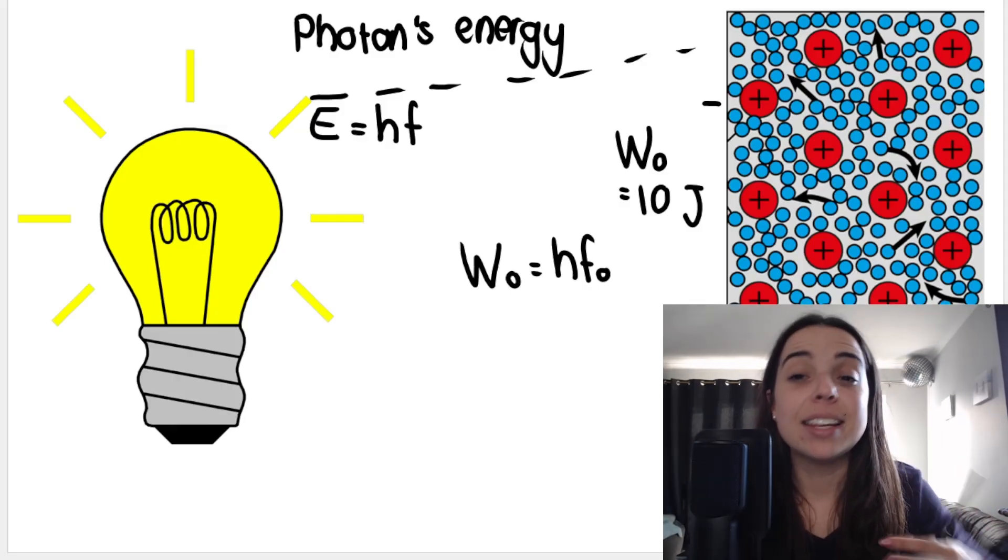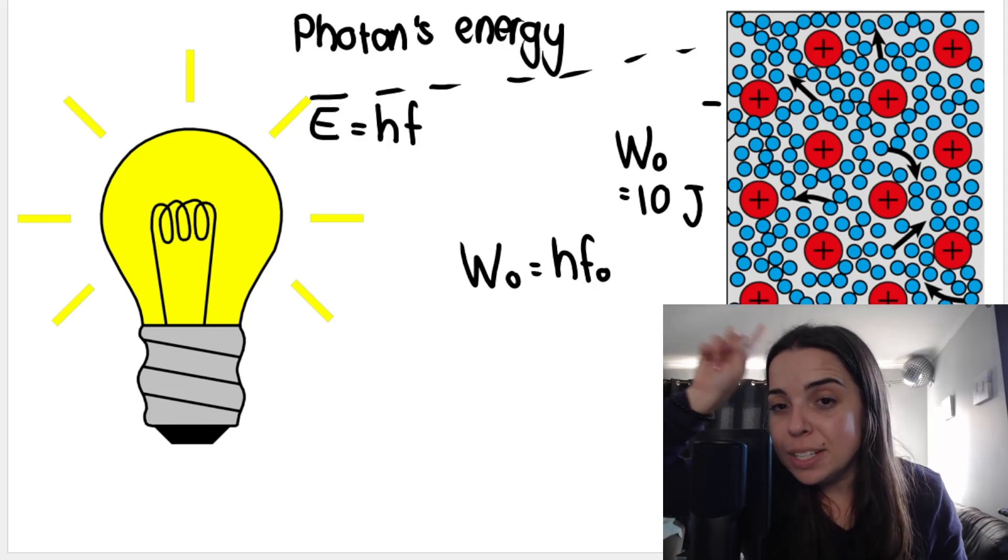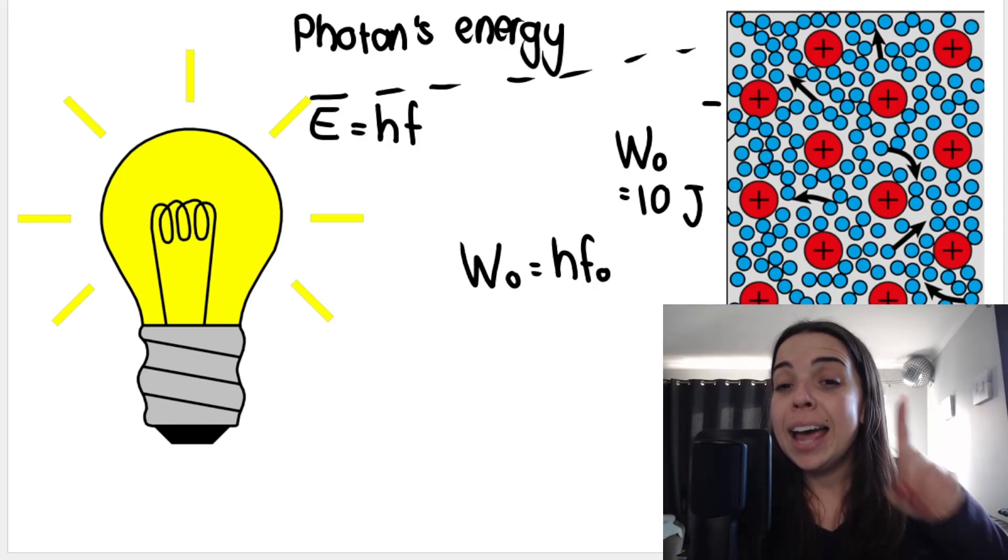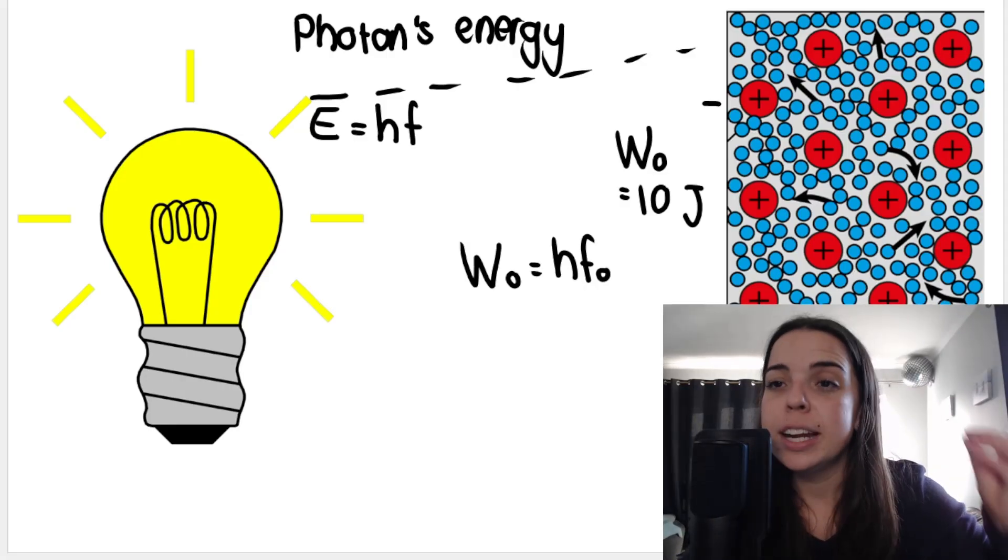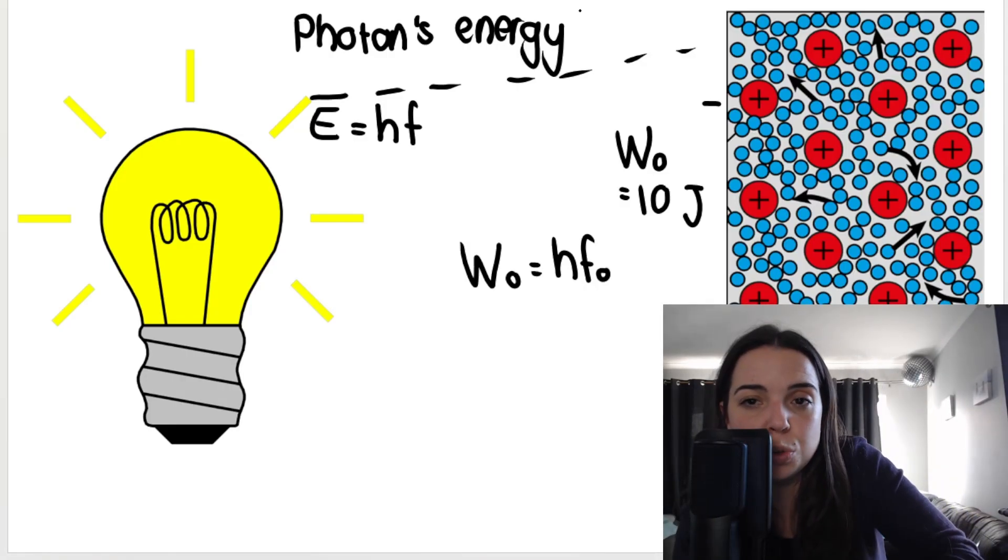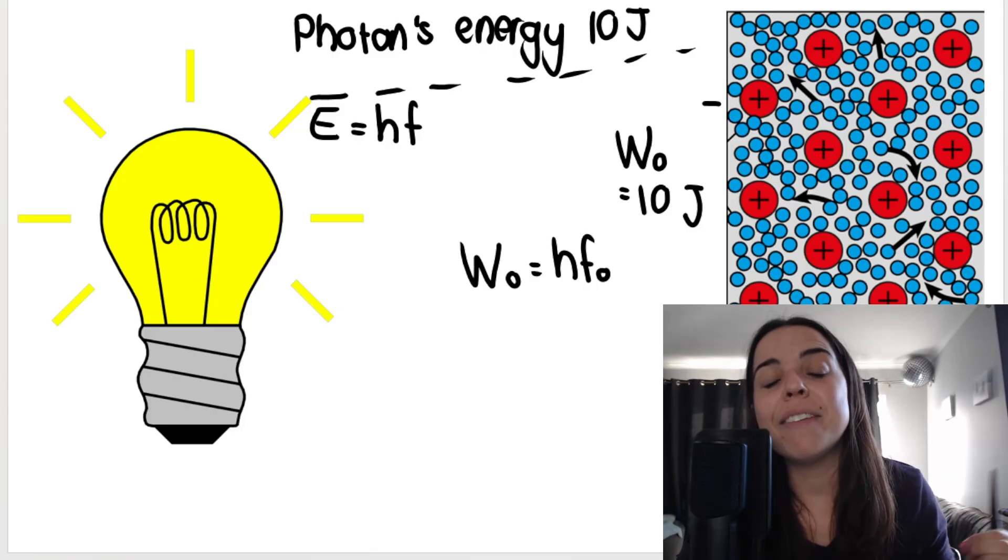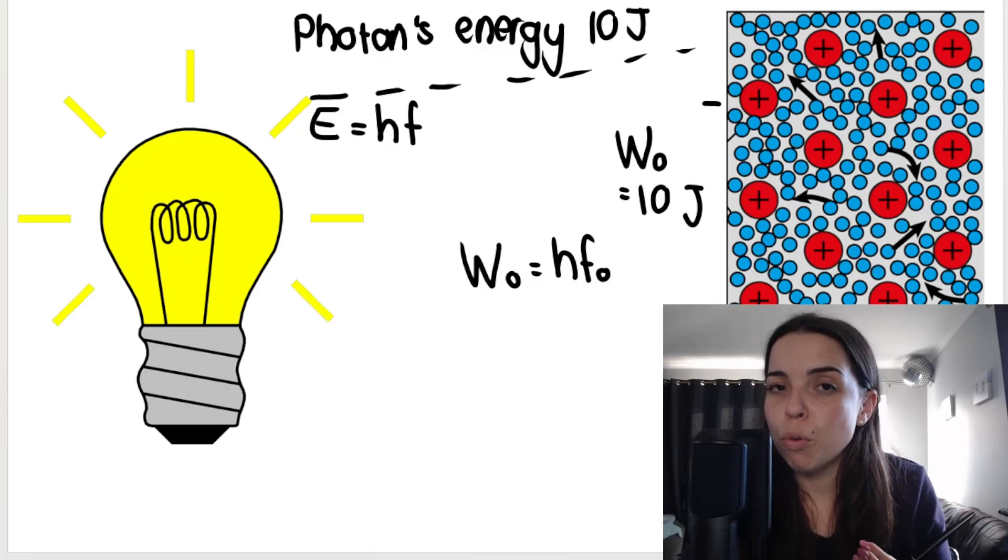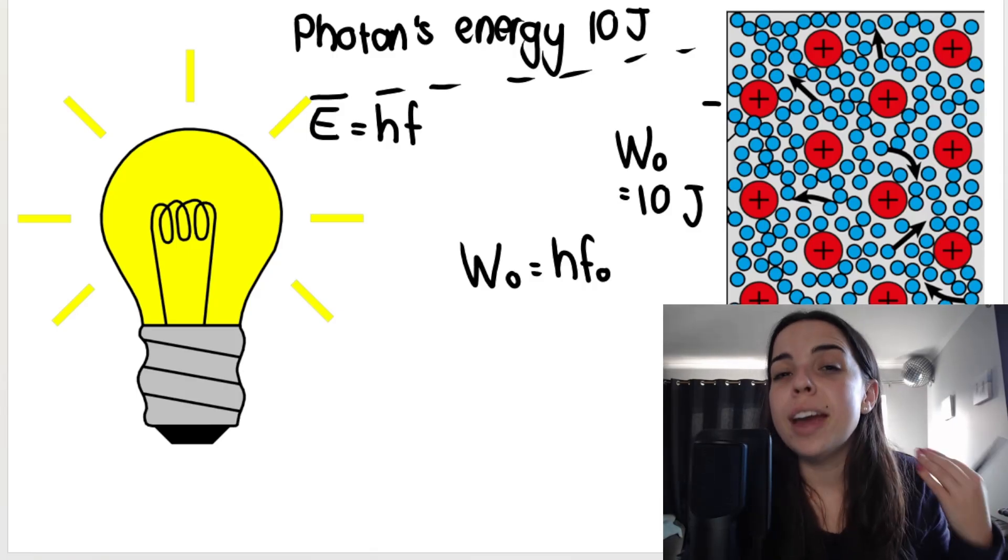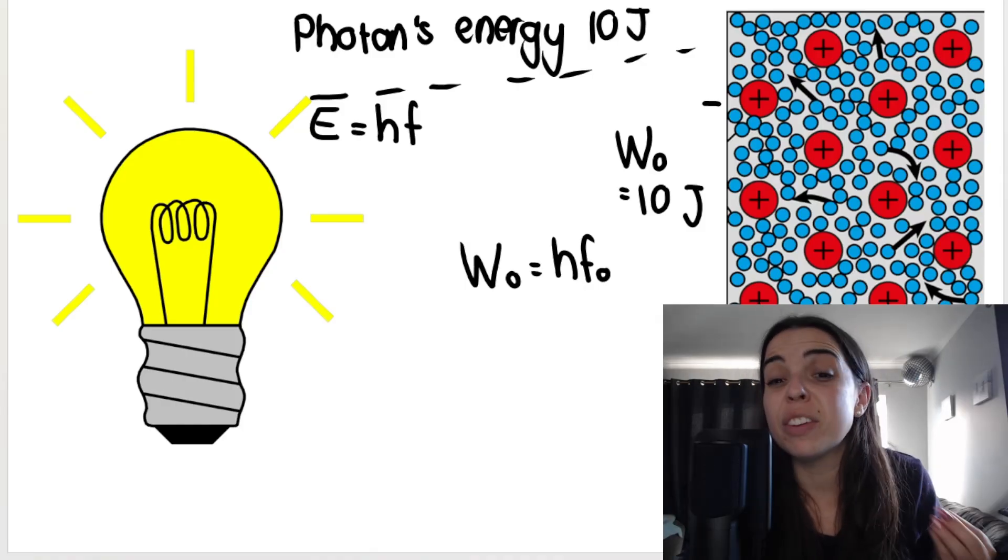Threshold frequency is the minimum frequency that a metal needs in order to allow an electron to be ejected from that metal surface, and work function is the minimum energy that the metal needs to allow an electron to escape from the surface. Let's pretend our work function is 10 joules.